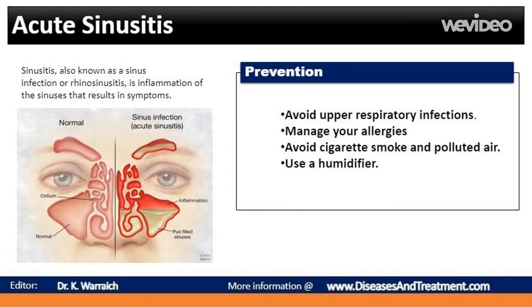Take these steps to help reduce your risk of getting acute sinusitis: Avoid upper respiratory infections — minimize contact with people who have colds, and wash your hands frequently with soap and water, especially before meals. Manage your allergies by working with your doctor to keep symptoms under control. Avoid cigarette smoke and polluted air, as tobacco smoke and other pollutants can irritate and inflame your lungs and nasal passages. Use a humidifier if the air in your home is dry — adding moisture may help prevent sinusitis. Be sure the humidifier stays clean and free of mold with regular, thorough cleaning.